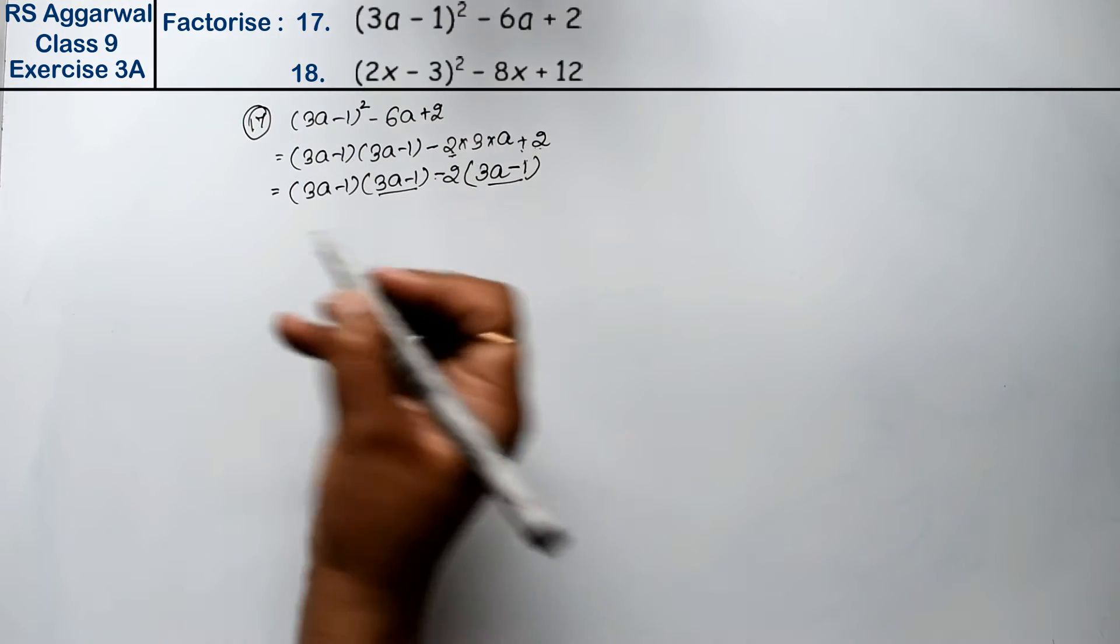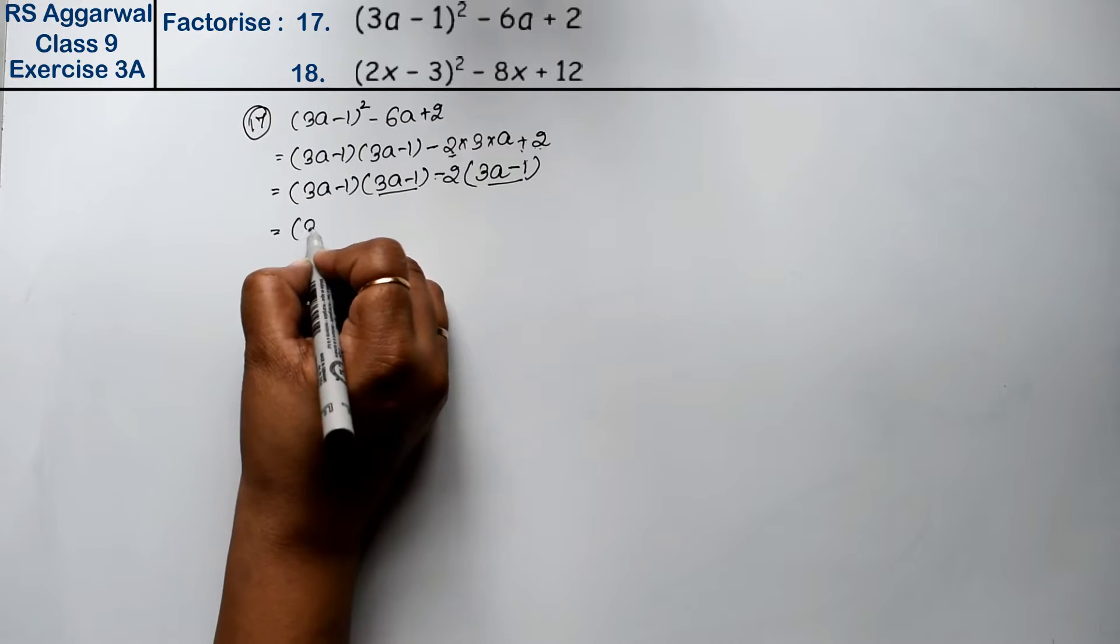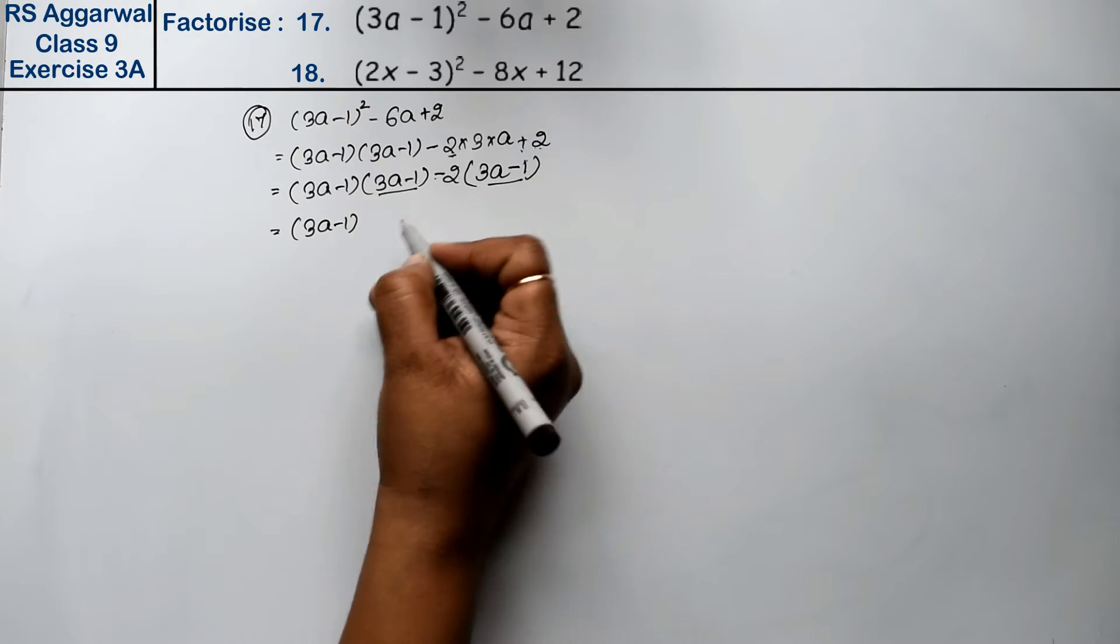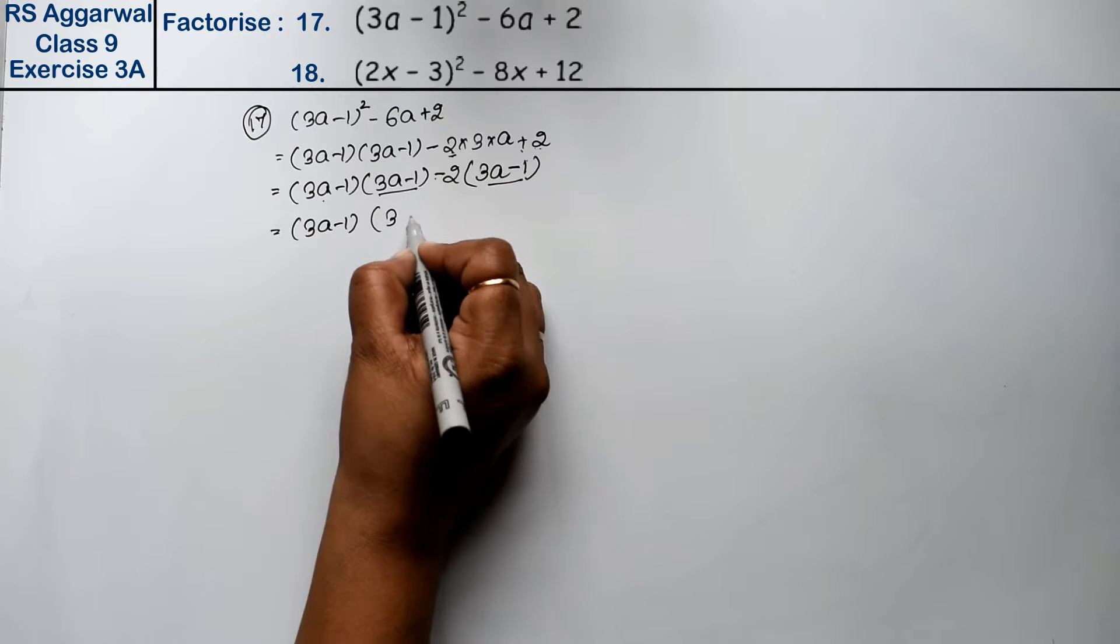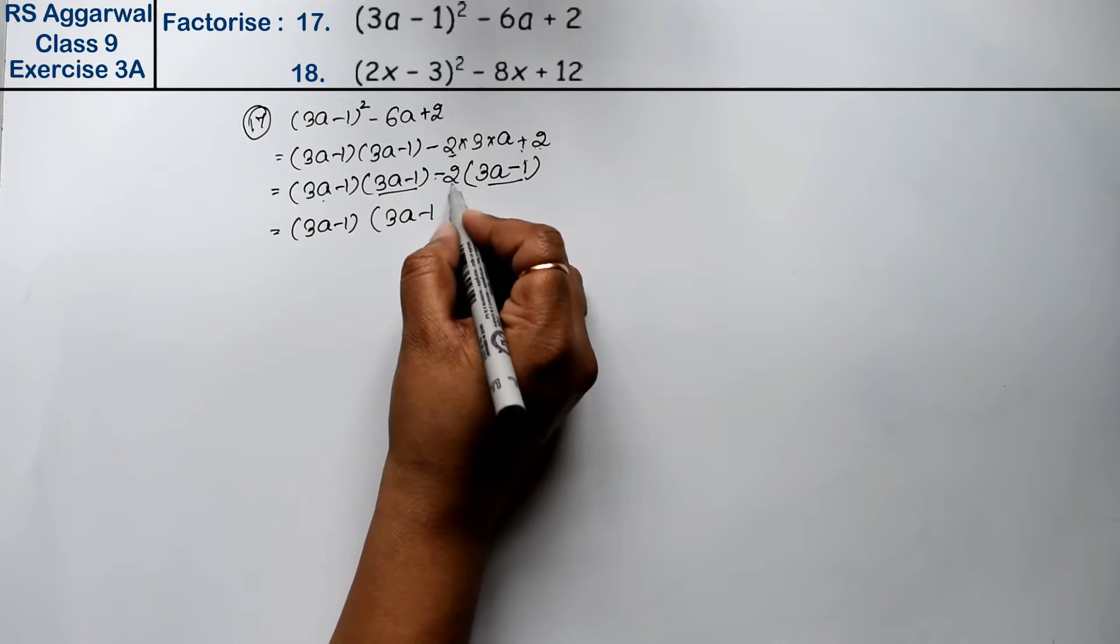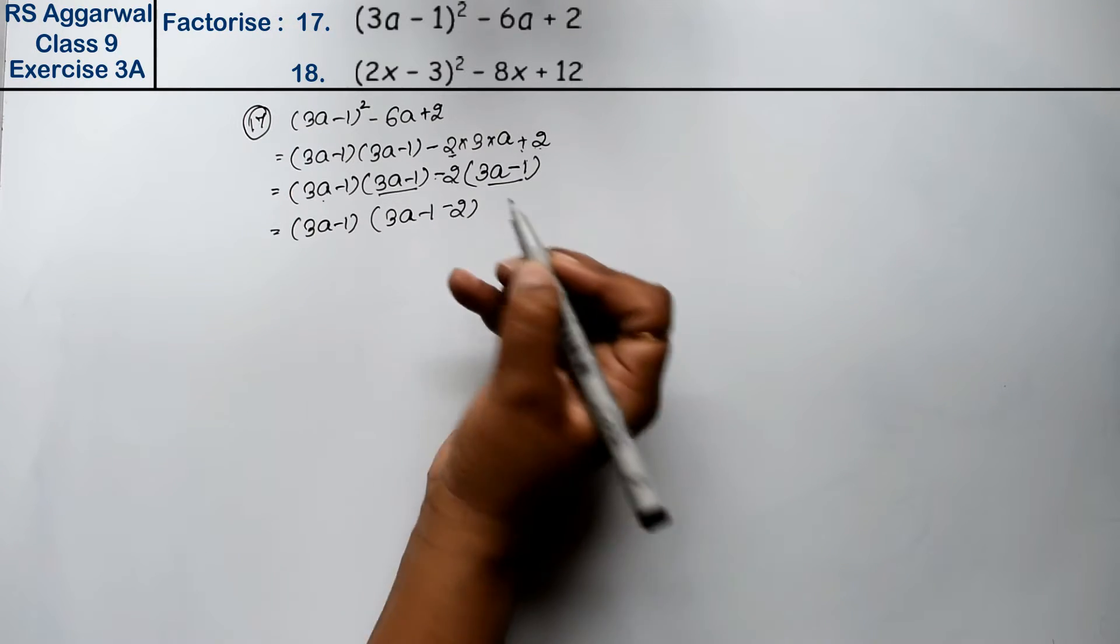Now look, here we have (3a - 1) and here also (3a - 1), so (3a - 1) becomes common. What remains inside? After taking one common, this (3a - 1) remains and minus 2 remains.